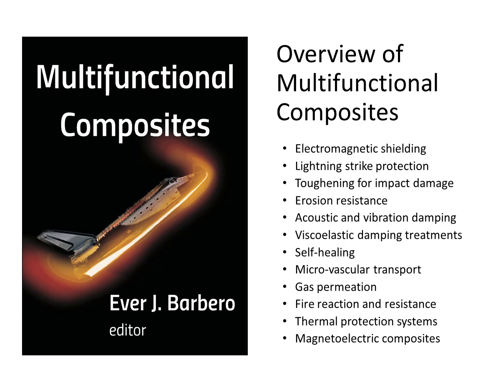However strong a composite material may be, it may fail to perform its function if the material does not adequately provide added functionalities that, besides strength, are crucial for the performance of the application. A cursory look at chapter titles gives an idea of what functionalities we are trying to achieve: electromagnetic shielding, lightning strike protection, toughening for impact damage, erosion resistance, acoustic damping, vibration damping, self-healing, microvascular transport, reduction of permeability, fire resistance, thermal protection, and magneto-electric composites.